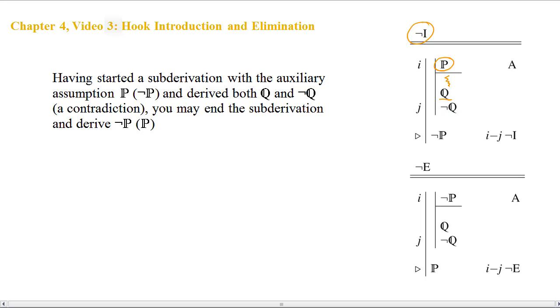Then the fact that P led to a contradiction allows us to move out of the subderivation and attach a hook to the original auxiliary assumption. You'll see that hook elimination below is of essentially the same structure, except here we start with a hook in our auxiliary assumption. We derive the contradiction, and that allows us to remove the hook so we wind up with just P.